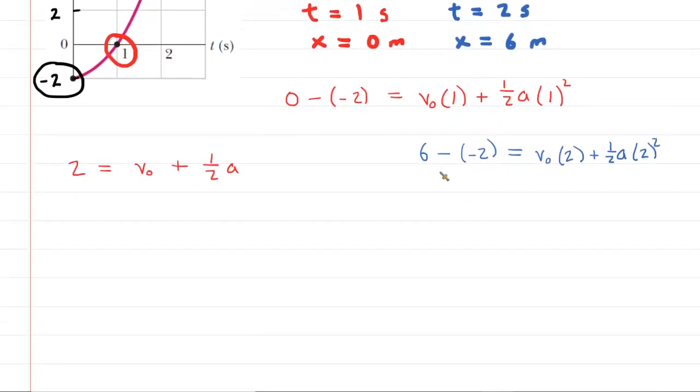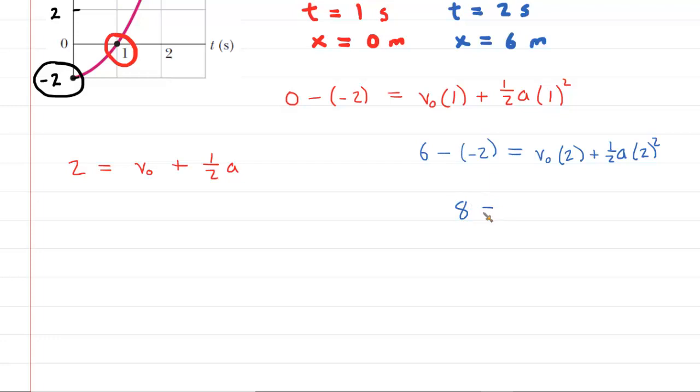We'll simplify it here again, we have 6 minus negative 2, this gives us 8 is equal to 2 times the initial velocity, plus, now let's square the 2 to get 4 and then take half of 4 to get 2. So this is plus 2a.